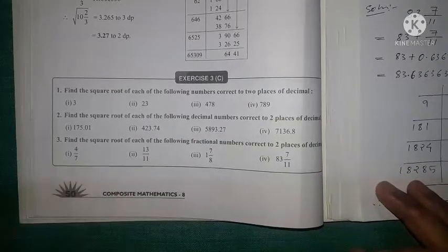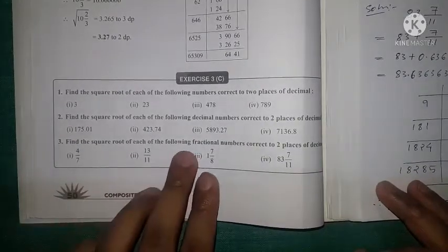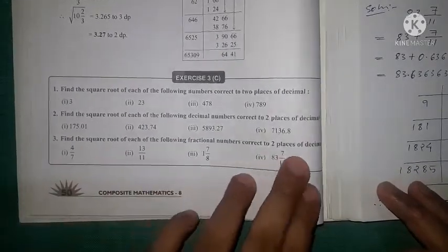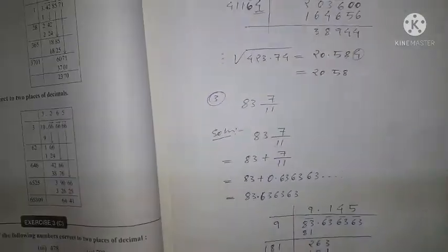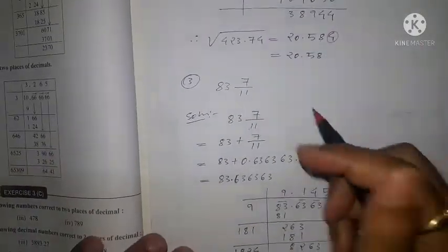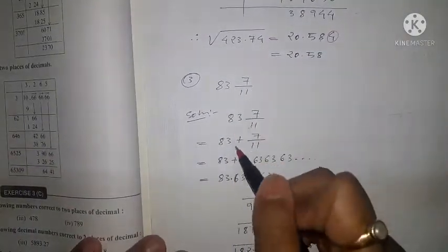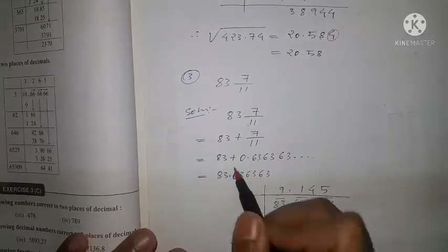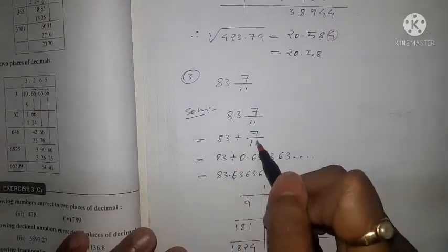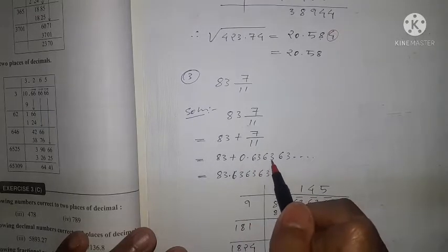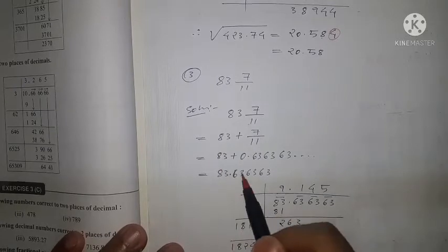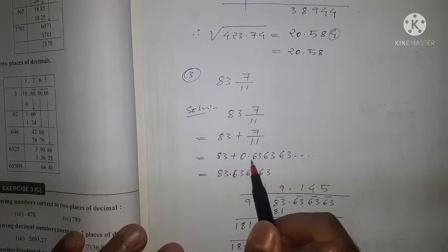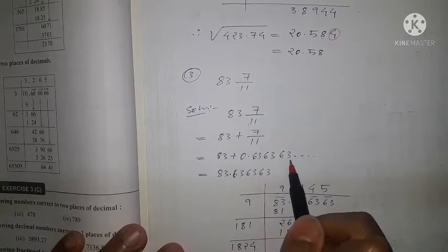Let's move to question 3: find the square root of each of the following fractional numbers correct to two places of decimal. We'll do number 4: 83 and 7/11. This is a mixed fraction, so we write it as 83 + 7/11. Now 7/11 = 0.636363... repeating. So adding, we get approximately 83.636363...